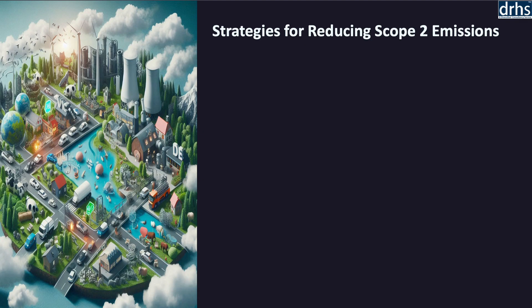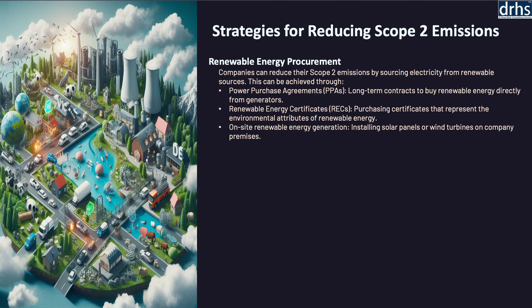Finally, let us discuss strategies for reducing scope 2 emissions. Scope 2 emissions, which stem from indirect emissions associated with purchased electricity, heating, and cooling, are critical for organizations aiming to lower their carbon footprint. The first strategy is Renewable Energy Procurement — one of the most effective ways to reduce scope 2 emissions. Organizations can invest in Power Purchase Agreements (PPAs) or purchase Renewable Energy Certificates (RECs) to ensure that their electricity consumption is sourced from renewables. This shift reduces the carbon intensity of their energy use and supports a broader transition to a low-carbon energy grid.